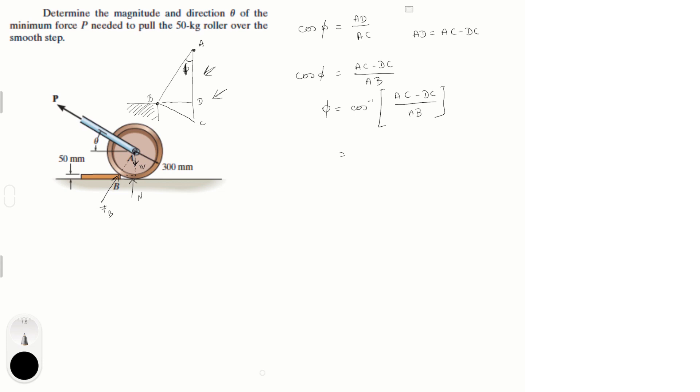We know that AC is equal to the radius of the roller which is 0.3 meters. I just converted it to meters. DC is equal to the height of the step which is 0.05 meters. Don't put 0.5 meters, don't make that mistake. Over again 0.3 meters which is AB, again the radius of the roller. Plug all this into your calculator and you're going to get that phi is equal to 33.56 degrees.